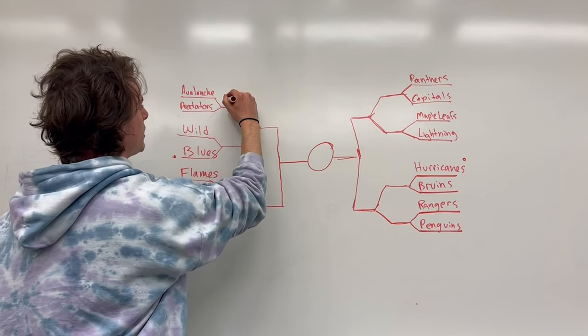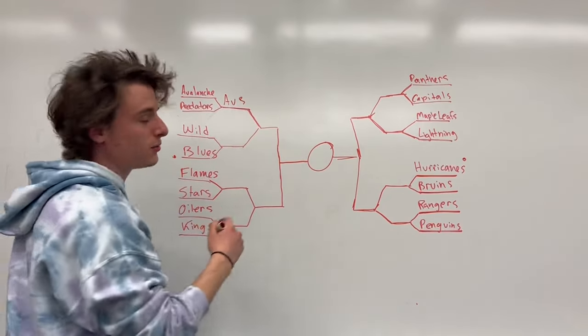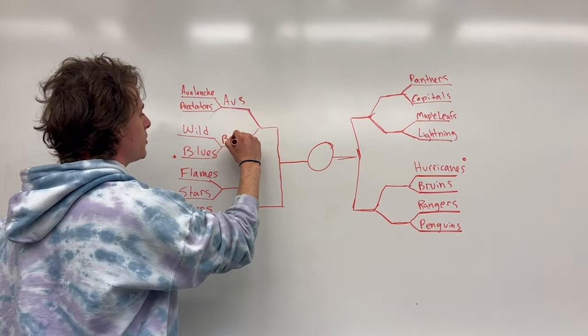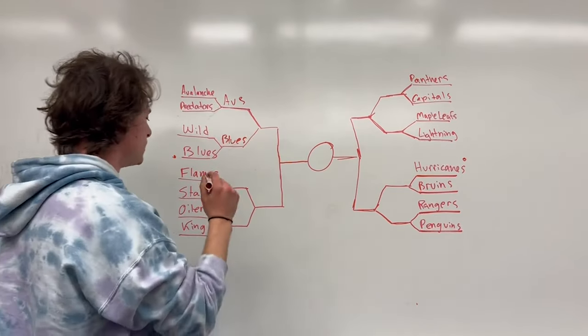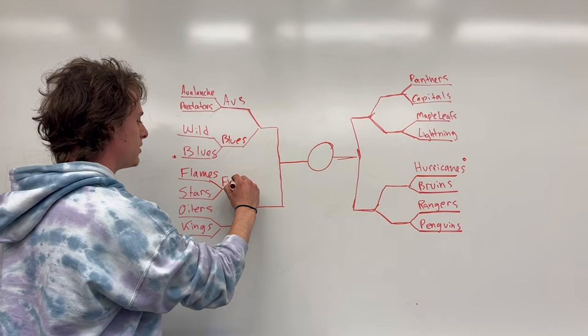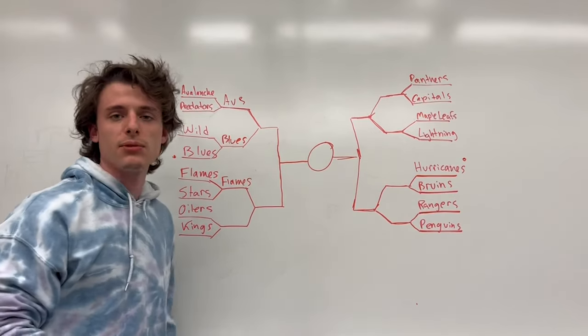Avalanche Predators, that's going to be the Avs, obviously. This one, we're going Blues. They're already up one in the series. Perron had a hat-trick last night. Flames are winning this one. Gaudreau, Tkachuk, Lindholm. Come on, give me a break.